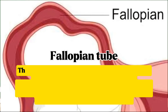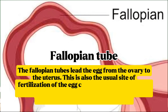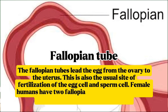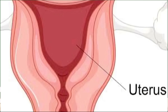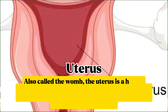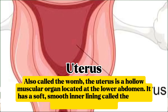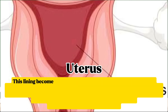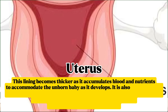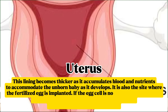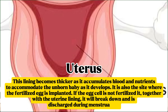Fallopian tube: the fallopian tubes lead the egg from the ovary to the uterus. This is also the usual site of fertilization of the egg cell and sperm cell. Female humans have two fallopian tubes, each connecting an ovary to the uterus. Uterus: also called the womb, the uterus is a hollow muscular organ located at the lower abdomen. It has a soft smooth inner lining called the uterine lining or endometrium, which thickens as it accumulates blood and nutrients to accommodate the developing baby. The fertilized egg is implanted here; if the egg cell is not fertilized, it and the uterine lining will break down and be discharged during menstruation.